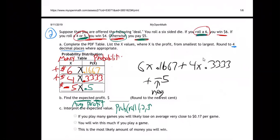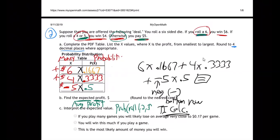Do you know how to do the negative on the calculator? The negative is the minus in parentheses on the calculator — it's on the bottom row of the TI calculator. Negative 5 times 0.5, then hit equals or enter to get an answer. I'm getting negative 0.1666. It says round to the nearest cent, so rounded to the nearest cent — pennies are two places past the decimal, and this is a 6, so round this up: negative 0.17.